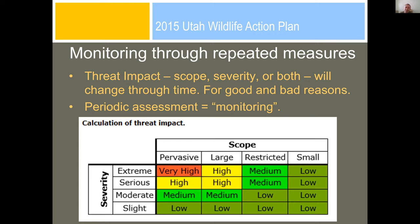If you do this more than once, you can monitor the impact of threats over time. The scope or severity of a threat will change — whether due to intrinsic reasons, human activities making it worse, or management making it better. That's what we're trying to do: make the threat less bad. So this is a way of tracking at a coarse scale whether you're doing any good.